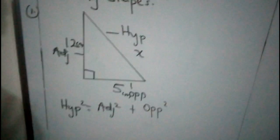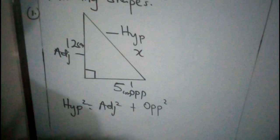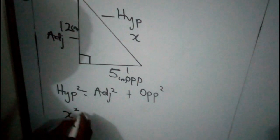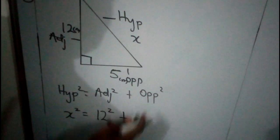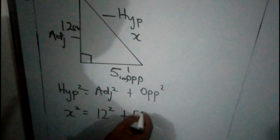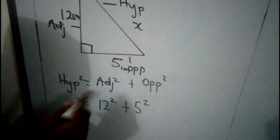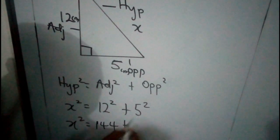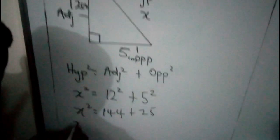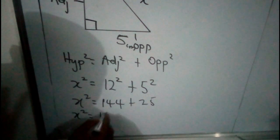Now it is time to substitute. Whatever you say hypotenuse, put X. Whatever you say adjacent, put 12. Whatever you say opposite, put 5. So: X squared equals 12 squared plus 5 squared. X squared gives you — what is 12 squared? That's 12 times 12, which is 144. Plus 5 squared, which is 25. So X squared equals 169.